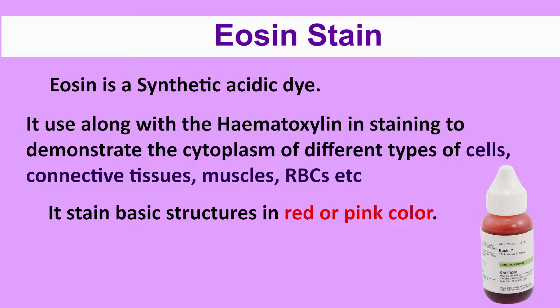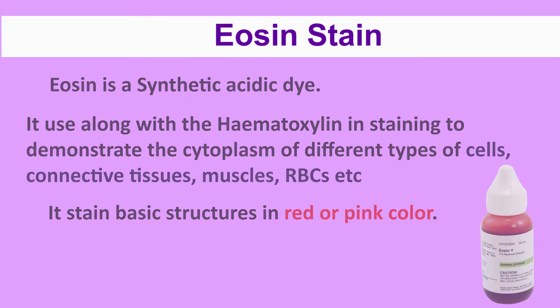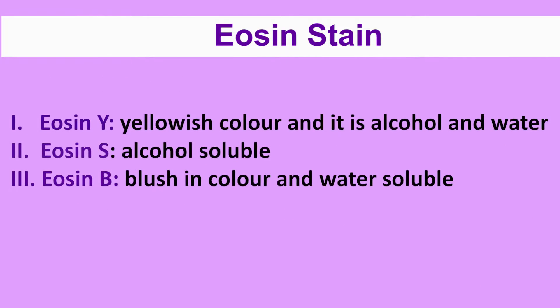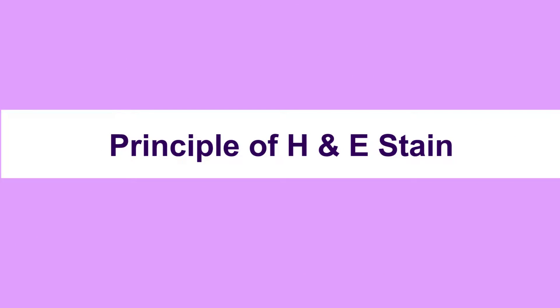Eosin is used to demonstrate the cytoplasm of different types of cells, connective tissue, muscles, red blood cells, etc. It stains basic structures in red or pink color. Eosin is available in the market as eosin Y, eosin S, and eosin B.